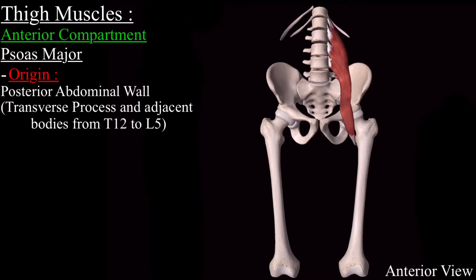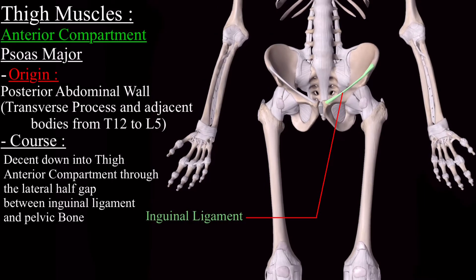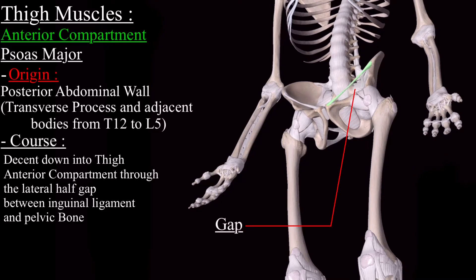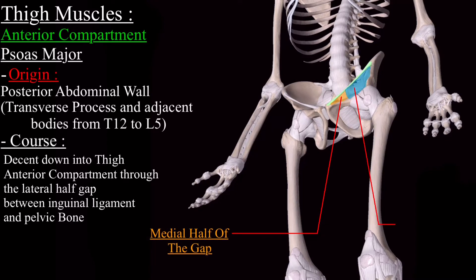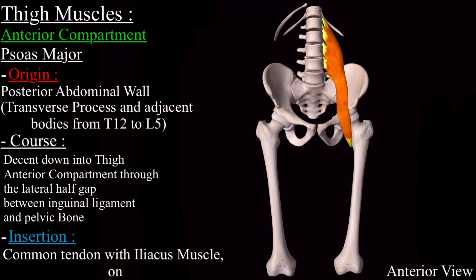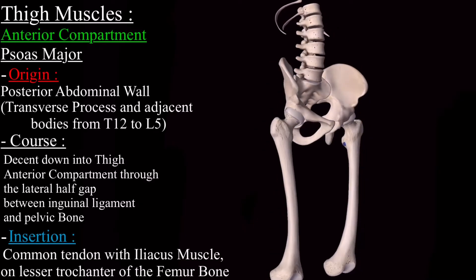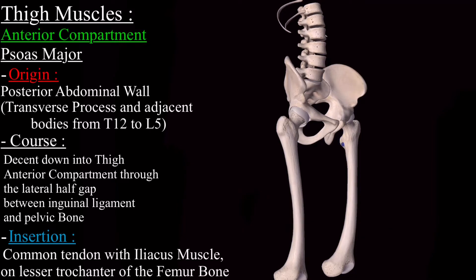As you can see, after origination, the muscle descends into the anterior compartment of the thigh through the lateral half of the gap between the inguinal ligament and the pelvic bone. This is the inguinal ligament, and this is the gap between the inguinal ligament and the pelvic bone — this is the medial half and this is the lateral half. The psoas major muscle passes into the anterior compartment through this lateral half, and inserts on a common tendon with the iliacus muscle on the lesser trochanter of the femur bone. This common tendon is called the iliopsoas tendon. This is the lesser trochanter of the femur bone, and this is the point of insertion of the psoas major muscle.